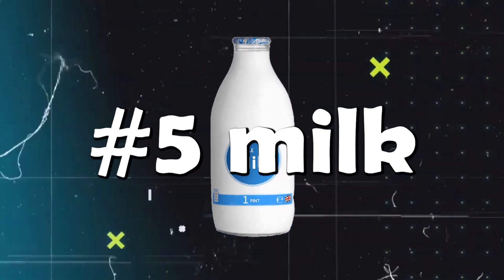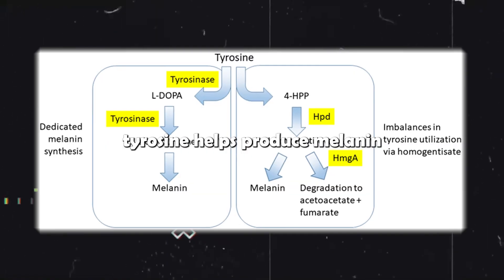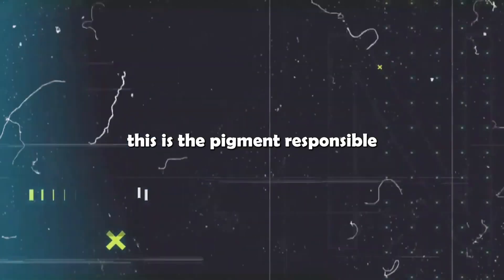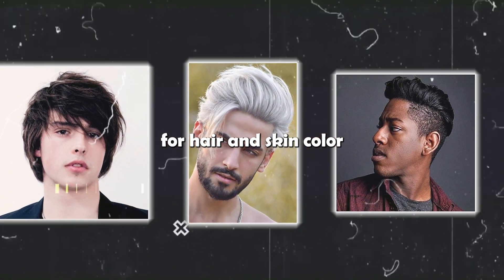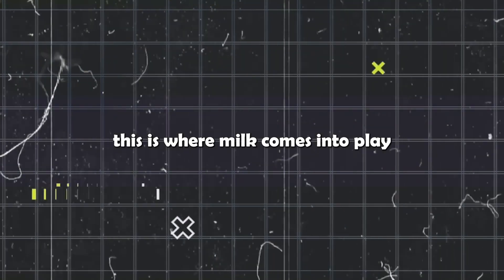Number 5 is milk. This one actually surprised me when I heard of it, but I can't guarantee that it works. Tyrosine helps produce melanin. This is the pigment responsible for hair and skin color, but too much tyrosine can darken your skin. This is where milk comes into play. Milk helps regulate tyrosine levels, giving your skin a radiant glow.